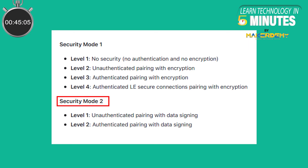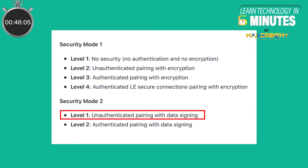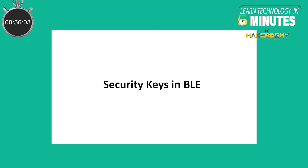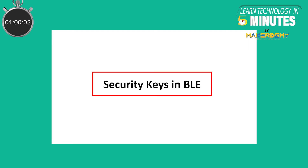Under Security Mode 2, there are 2 levels. Level 1 – Unauthenticated pairing with data signing. Level 2 – Authenticated pairing with data signing. Now that the modes and the levels are clear, let's do an overview of different security keys used in BLE.